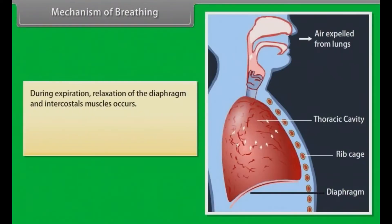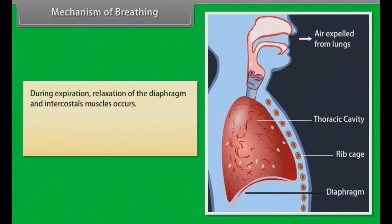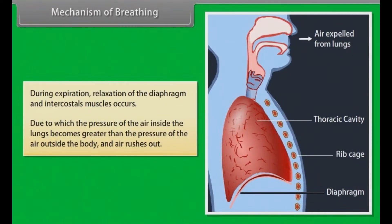During expiration, relaxation of the diaphragm and intercostal muscles occurs, due to which the pressure of the air inside the lungs becomes greater than the pressure of the air outside the body, and air rushes out.